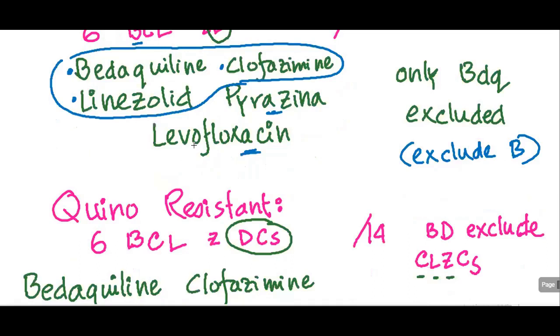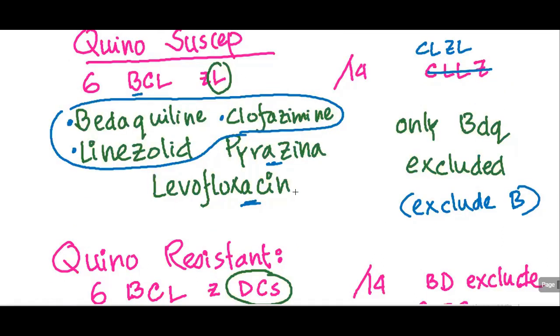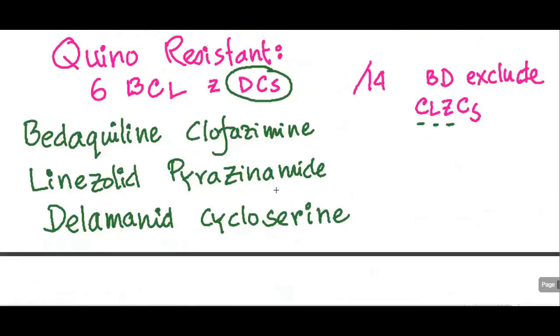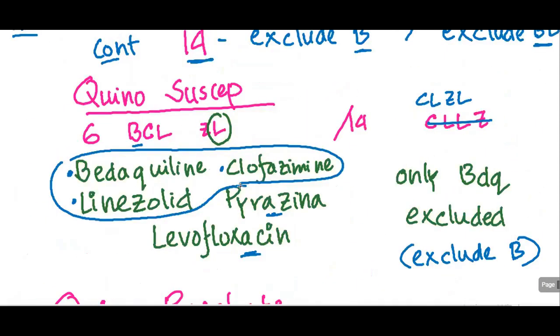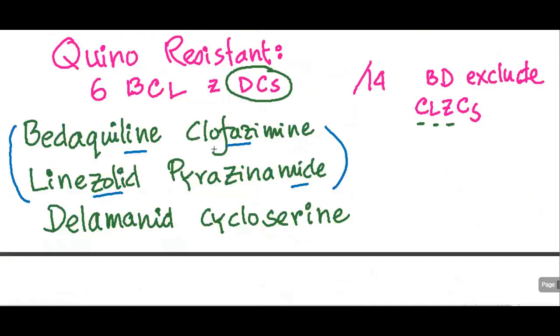In case of quinolone resistance, don't use L, rather use DCS. So the first four drugs will remain the same: bedaquiline, clofazimine, linezolid, and pyrazinamide. All the drugs are used in patients with quinolone susceptible. So those four. But what you change, you change levofloxacin and you add delamanid and cycloserine.